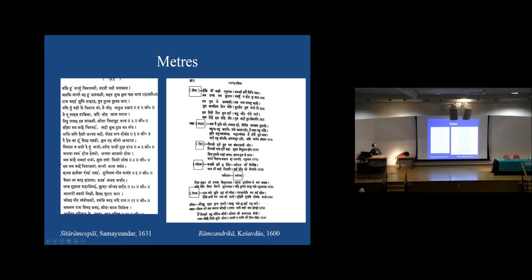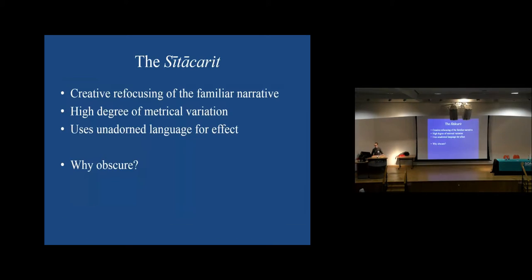The Sita Charit is closer to Ramchandrika in metrical complexity. Yet Riti poetry is also typically full of heavily adorned Kavya alankaras and very complex aesthetics, which the Sita Charit, as we have seen, doesn't really use. So it contains a very creative refocusing of a familiar narrative, with high metrical variation, while using an unadorned language for its effect — placing it in a slightly unexplored space between bhakti poetry and advanced courtly poetry. It's a bit of both.